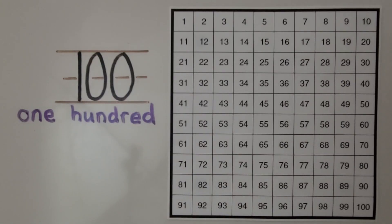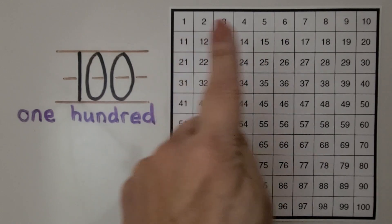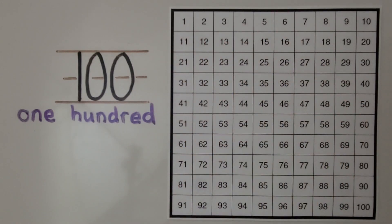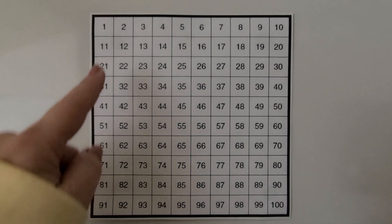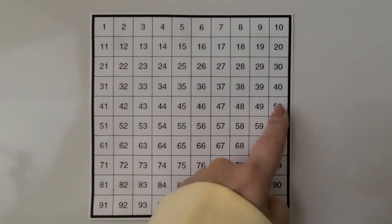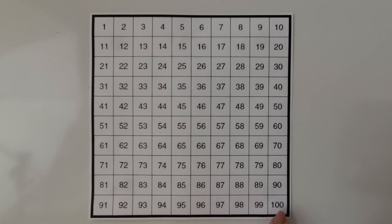When we use a 100 chart to help us count, it's best to slide our finger across instead of pointing and jumping, because we might miss a square with a number in it and make a mistake and count wrong. In our last lesson, 8.5, we learned to count to 50 using a 50 chart. We counted up to 50.